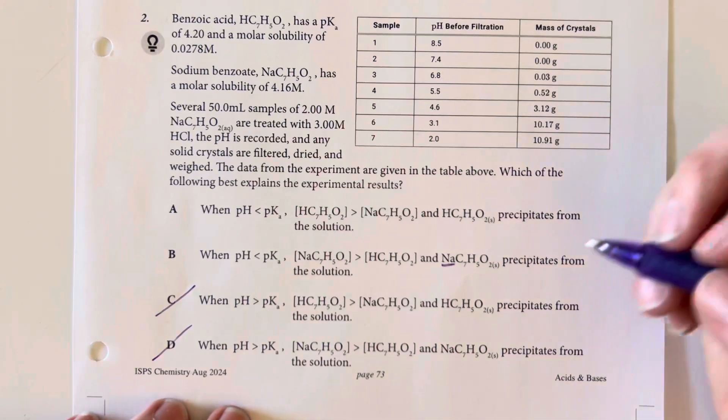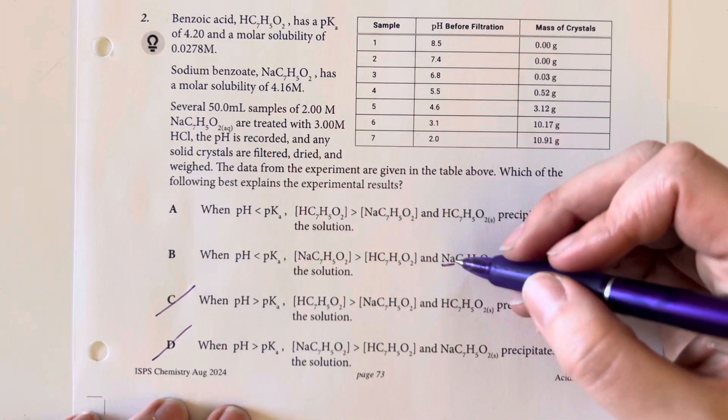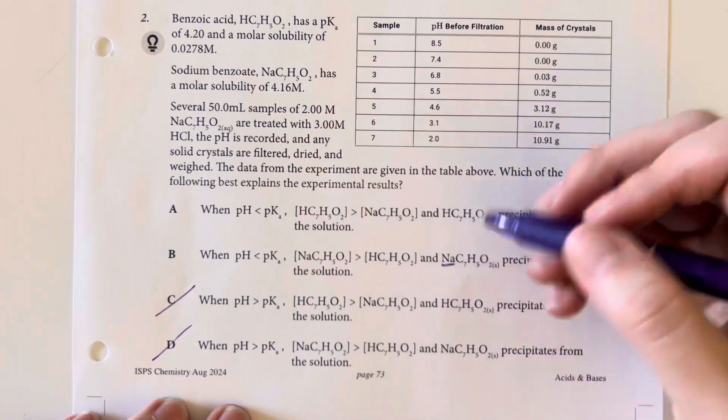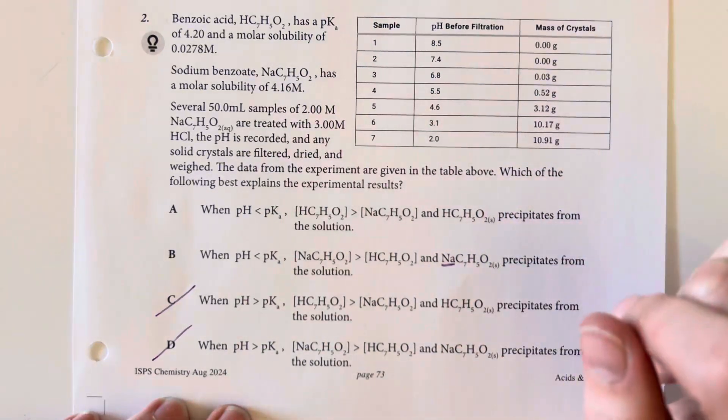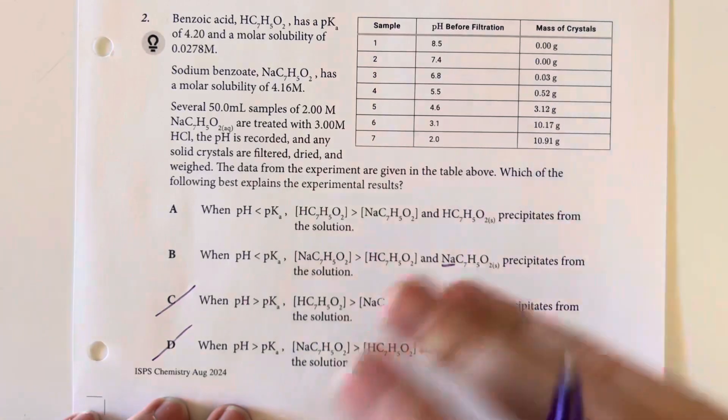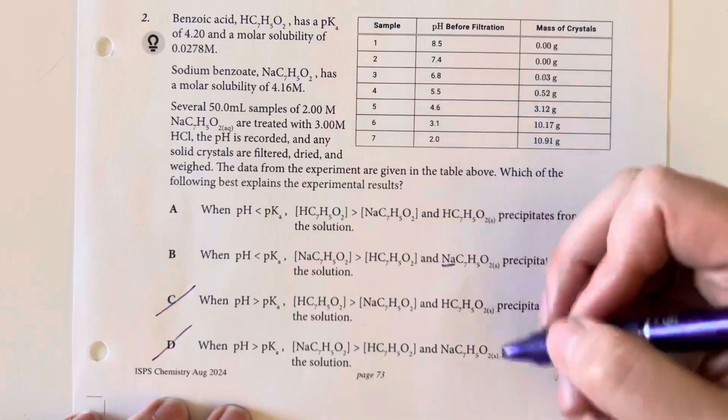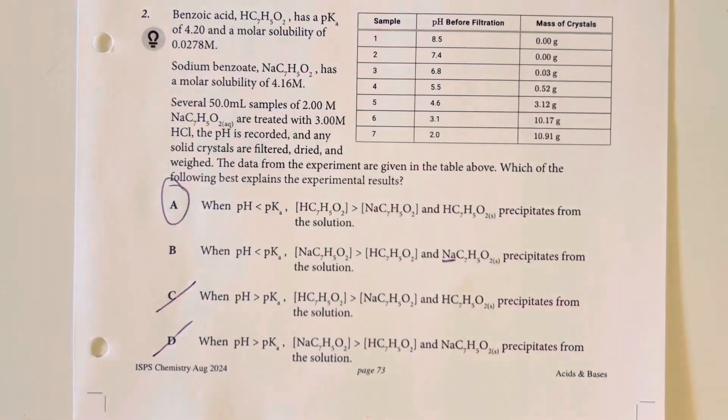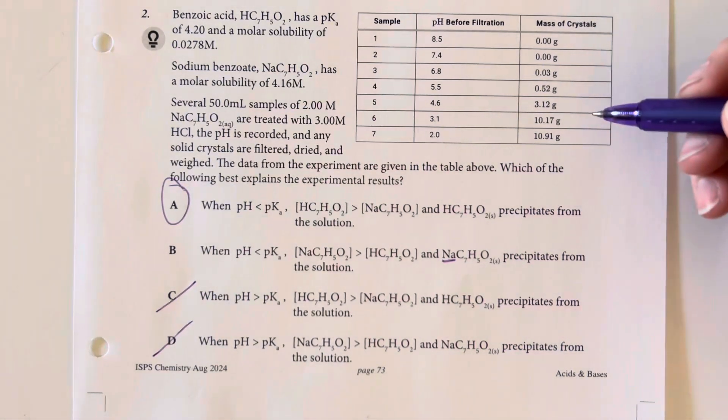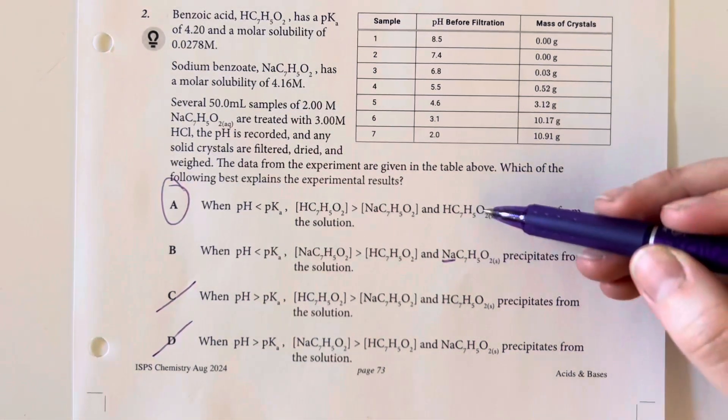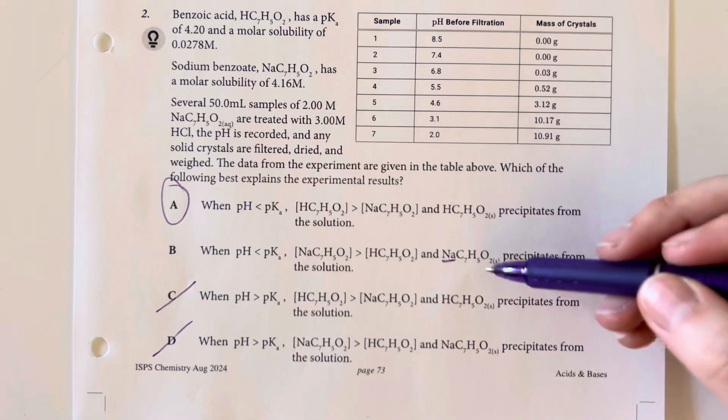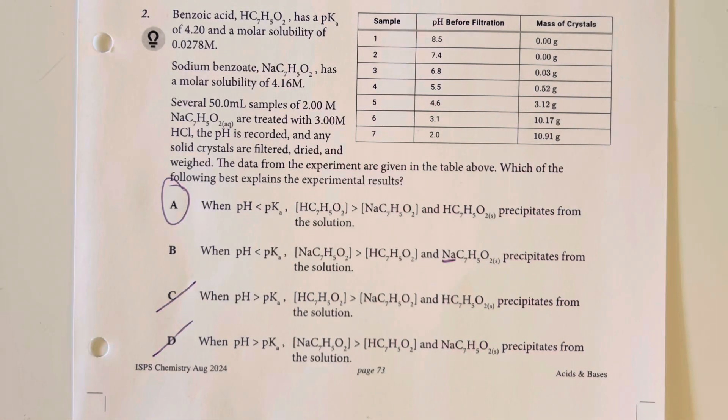Sodium compounds, since sodium is in the alkali family, all of them are going to be soluble. So the sodium benzoate is definitely not going to be the thing that precipitates out, which is another way that you could have eliminated this down. But answer choice A states that when pH is less than pKa, we get precipitation. And then we know that the benzoic acid is the thing that's going to precipitate, not the sodium benzoate, as the sodium benzoate is going to be very soluble, since all compounds with alkali metals are soluble.